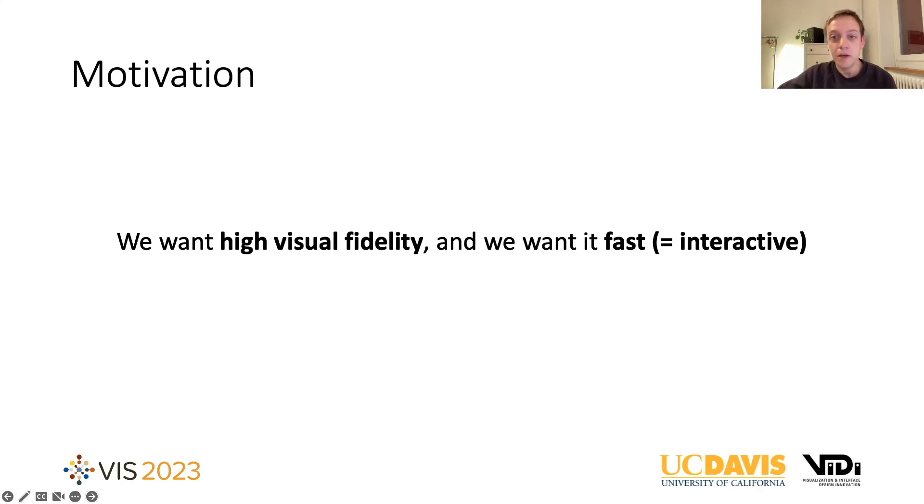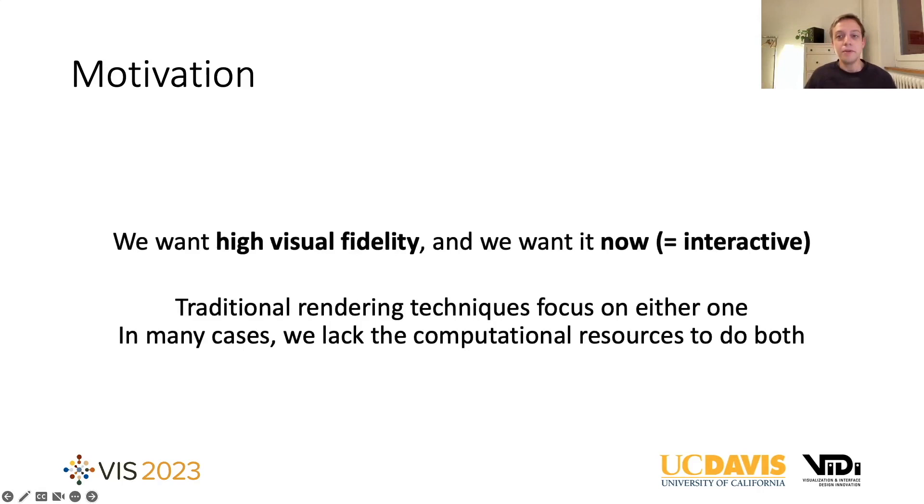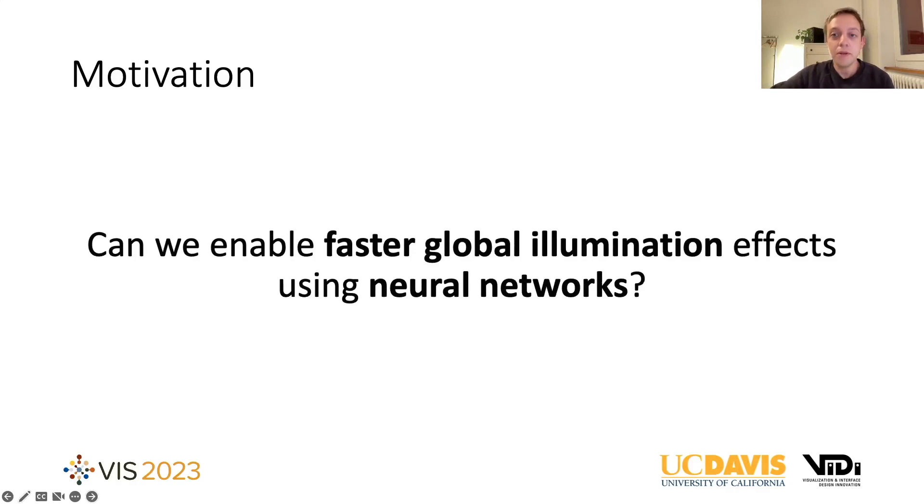Unfortunately, many rendering techniques try to focus on only one of those two aspects or in many cases, we just don't have the resources needed to achieve both. So we thought, can we create global illumination effects using neural networks and can we do it faster than traditional rendering techniques?